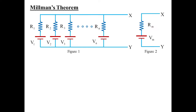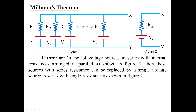What does Millman's theorem state? So Millman's theorem states, if you look at figure 1 and figure 2, figure 1 can be changed to figure 2 with the help of Millman's theorem. It states that if there are n number of voltage sources in series with internal resistances arranged in parallel as shown in figure 1 — that is, V1 is a voltage source, R1 is the series resistance — this entire circuit can be changed to figure 2 with Vm and Rm, where Vm is Millman's voltage and Rm is Millman's resistance.